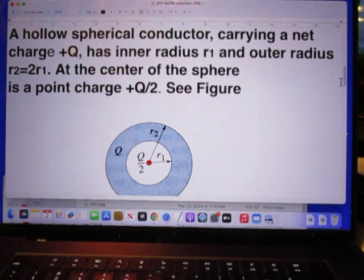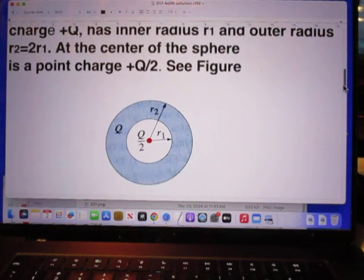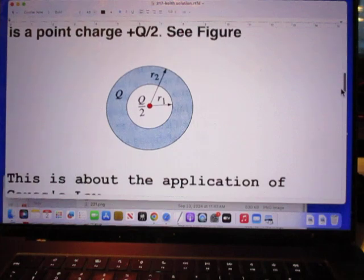A hollow spherical conductor carrying a net charge plus Q has an inner radius R1 and outer radius R2, which is 2R1. At the center of the sphere is a point charge plus Q over 2. See the figure.